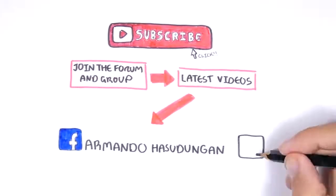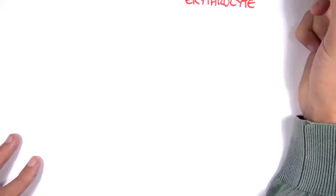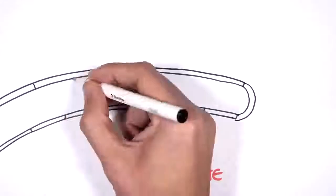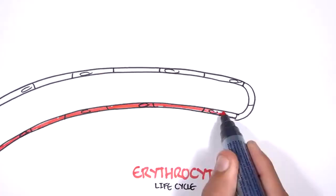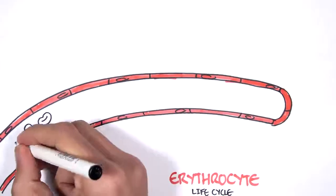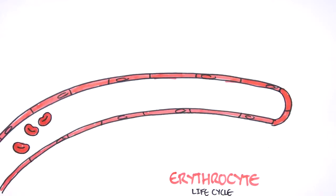In this video, we're going to look at the red blood cell life cycle or erythrocyte life cycle. So here I'm drawing a blood vessel. A blood vessel contains red blood cells.